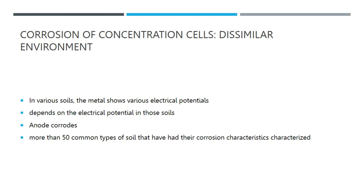There are more than 50 common types of soils that have had their corrosion characteristics characterized, with varying levels of soil resistivity. Dissimilar environment corrosion cells form where soil resistivity values vary significantly over a small area. These electrochemical corrosion cells are at their most dangerous when the anode is relatively small, the soil resistivity is at its lowest, and the electrical potential difference is at its highest. Examples of corrosive soil include Merced or alkali silt loam, Montezuma or alkali clay adobe, muck, and Yolo clay loam.